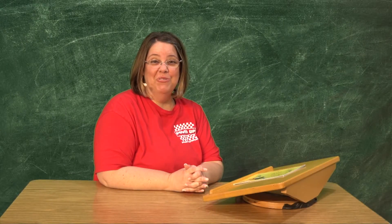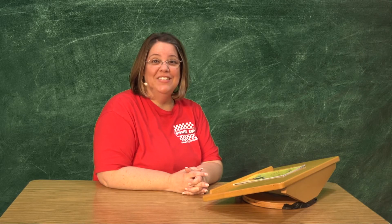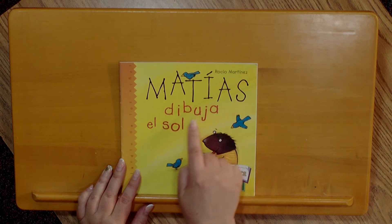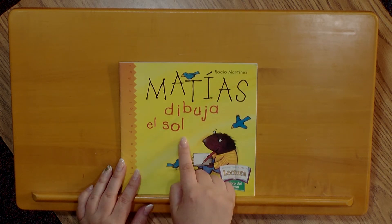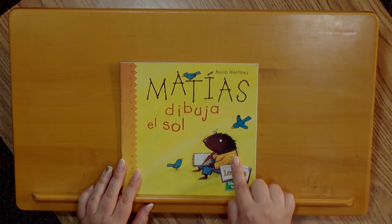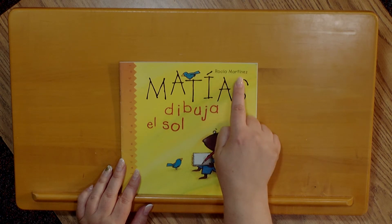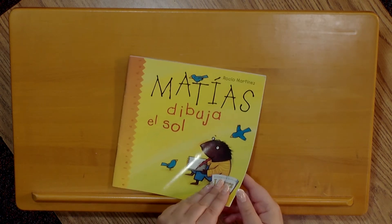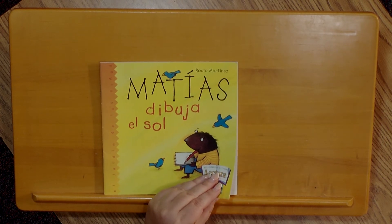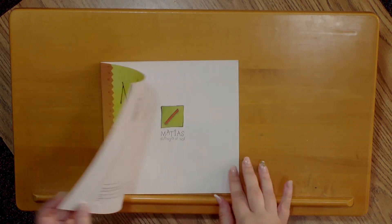Niños, tengo un libro que les quiero leer ahora. Este libro se trata de las figuras. El título es Matías dibuja el sol. Este animal se llama Matías y se va a dibujar el sol. Está escrito por Rocío Martínez. Yo quiero que piensen de qué se va a tratar este libro.